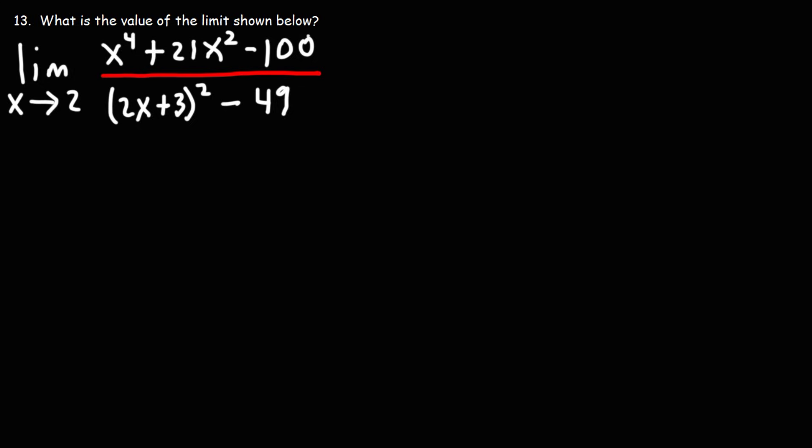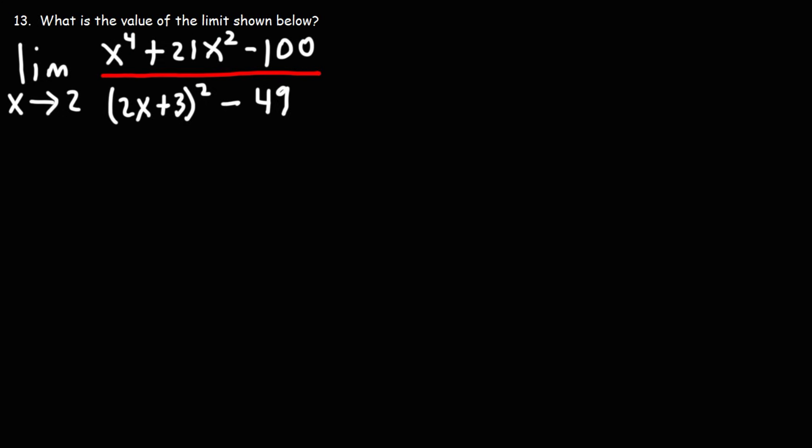Now, in the numerator we have a trinomial. A trinomial is a three-term expression. A binomial is two terms, and if it has four or more terms it's typically just referred to as a polynomial. If it's only one term, it's a monomial.